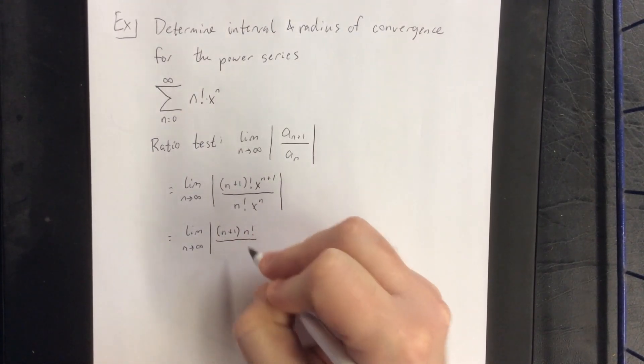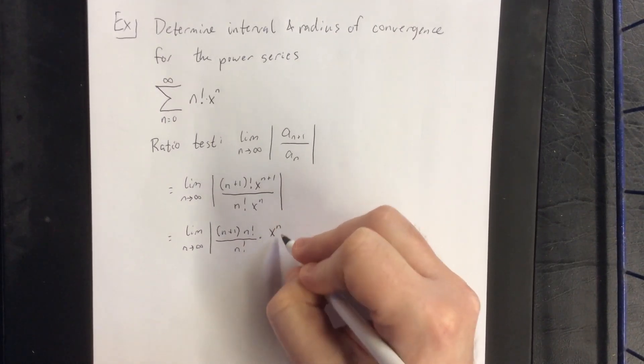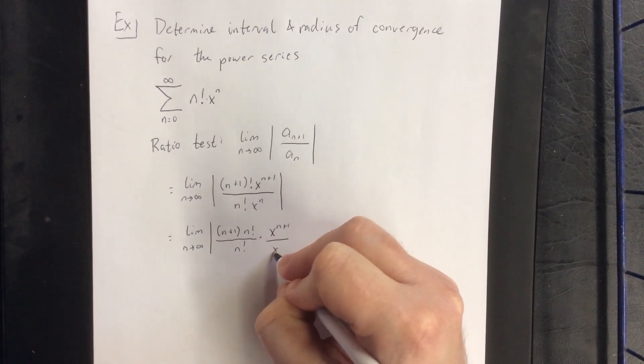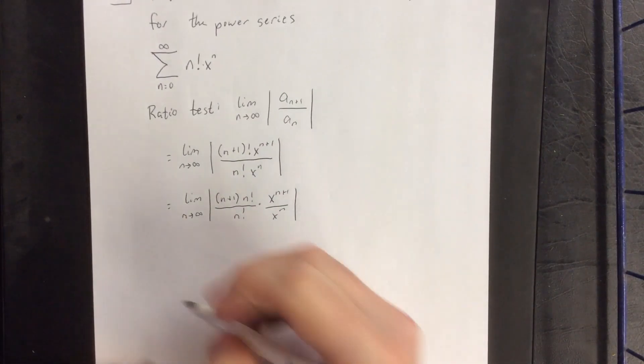To wind up with n plus 1 times n factorial divided by n factorial, that's being multiplied by x to the n plus 1 power over x to the n power. Both of these will reduce quite nicely.